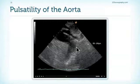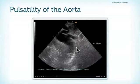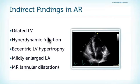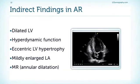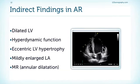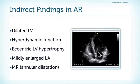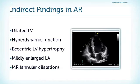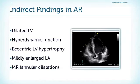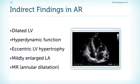Further findings include a dilated and hyperdynamic left ventricle with eccentric left ventricular hypertrophy — hypertrophy combined with dilatation. The left atrium is usually normal in size initially, then gradually increases, but not to the same degree as in mitral stenosis or mitral regurgitation. If the left ventricle dilates further, increased mitral annular dilatation can cause secondary mitral regurgitation in some patients.